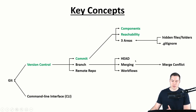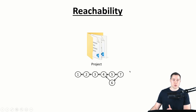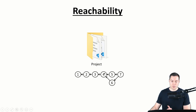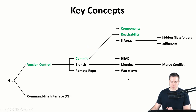Next is the concept of reachability. For each commit, Git stores a reference to the parent or parents of that commit — that's why commits are connected with arrows going in one direction. Commit 7 has two parents, commits 5 and 6, which in turn only have one parent, commit 4. So if you are at commit 7, you can reach all other commits in the history. But if you are at commit 5, you can only reach commits 1 to 4 — commits 6 and 7 are not reachable.